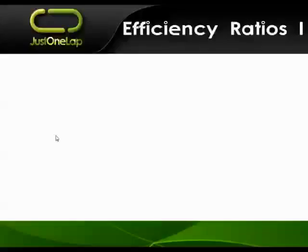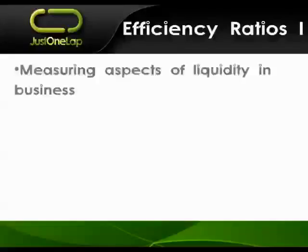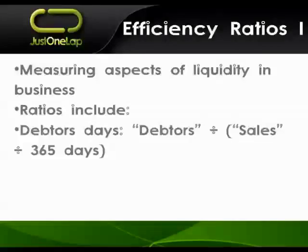Liquidity is really an efficiency concern — it's about day-to-day management, not strategic management. When analyzing liquidity you're looking at efficiency ratios. The ratios measure all aspects of liquidity in the business. First, debtor days: the lower your debtor days, the faster your sales are turning into cash, so you have more cash, you're financing debtors less, lower admin costs, less exposure to bad debt. Debtor days is simply debtors divided by sales divided by 365 — essentially asking: how many sales do we generate per day and how many days do those sales stay outstanding?